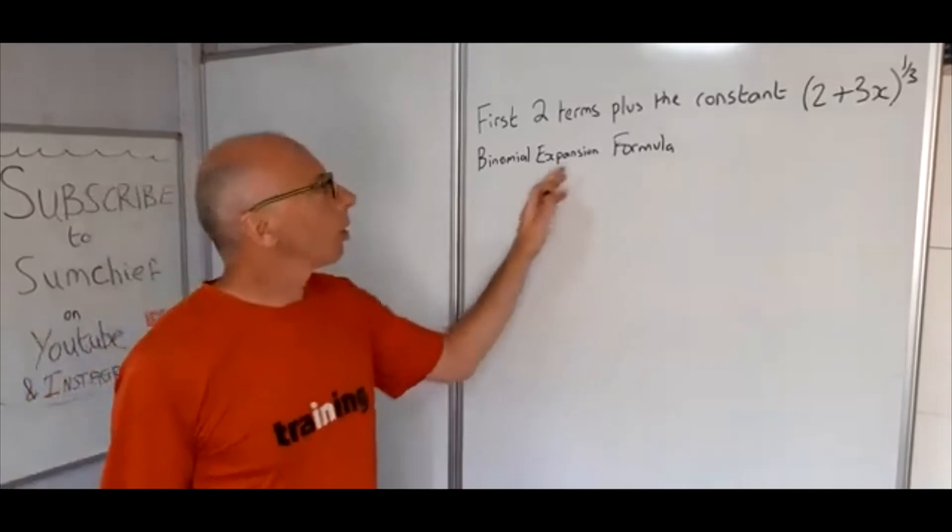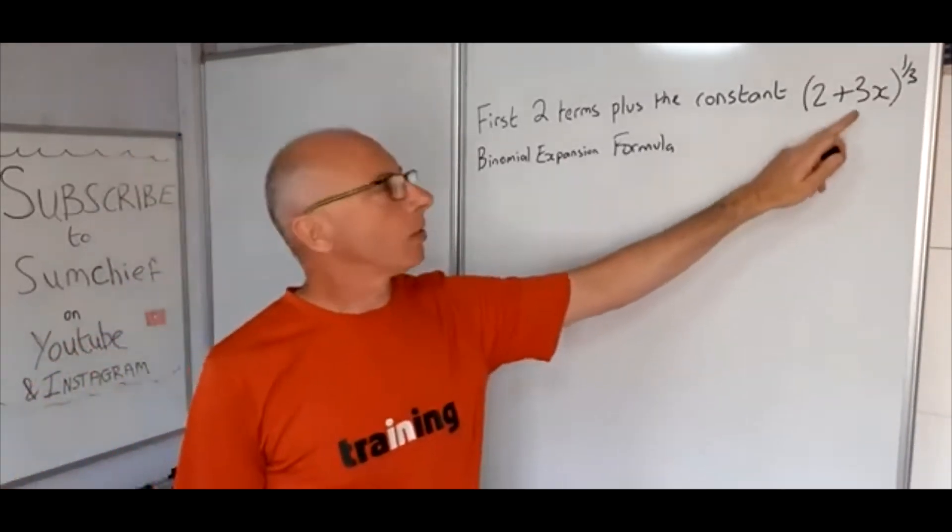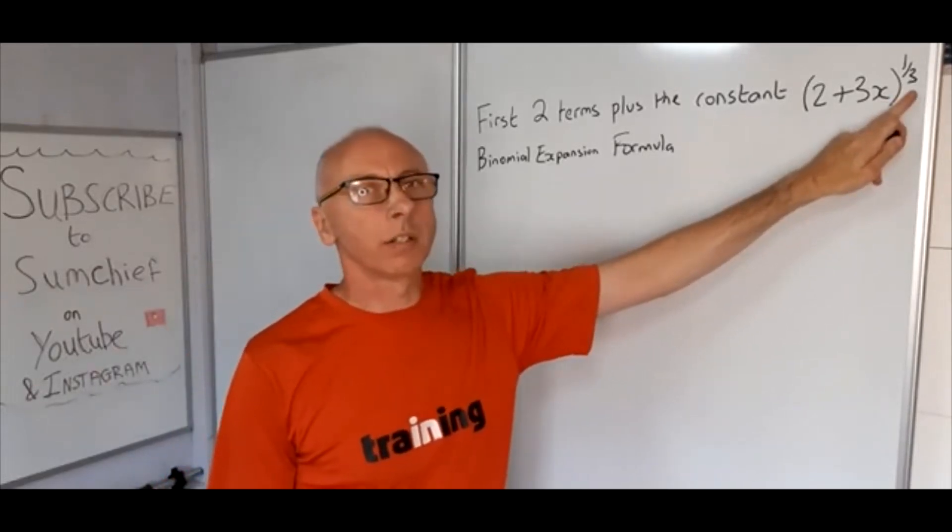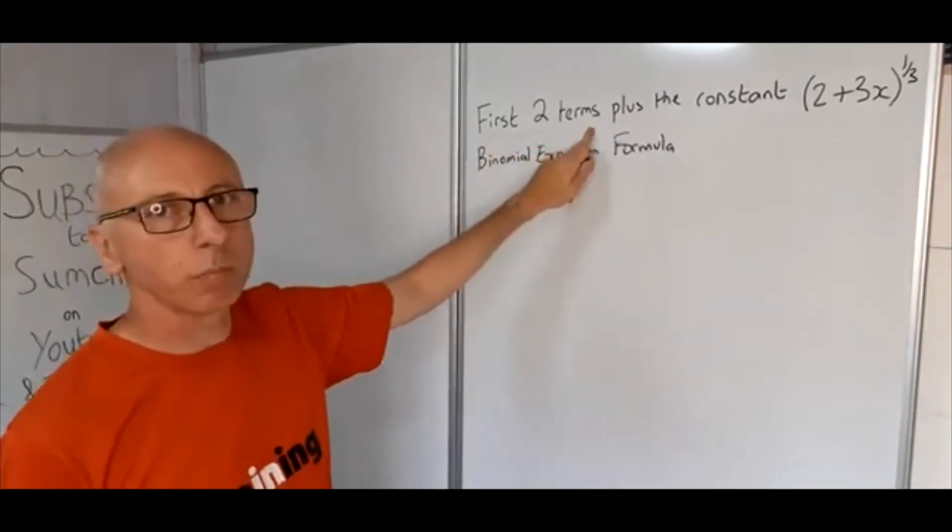In this video we're going to use the binomial expansion formula to find the expansion of this function, 2 plus 3x to the power of 1/3, and what we're looking for is the first two terms plus the constant.